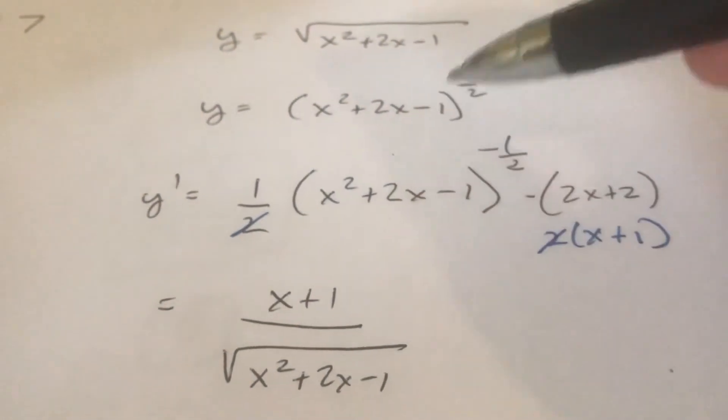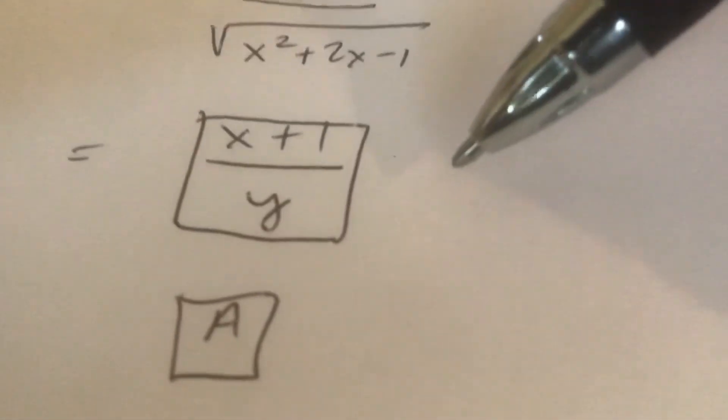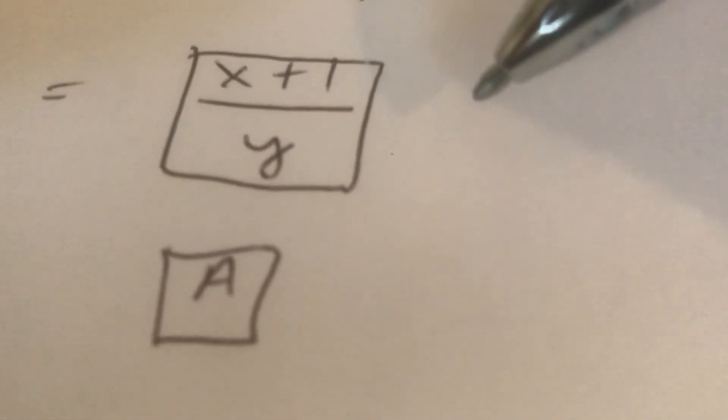So that equals that. So instead of that I can write y. It was a little bit of a trick. x plus 1 over y which equals a.